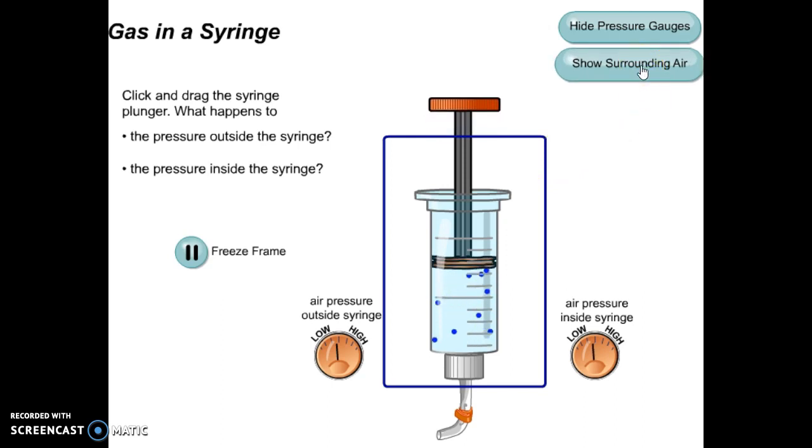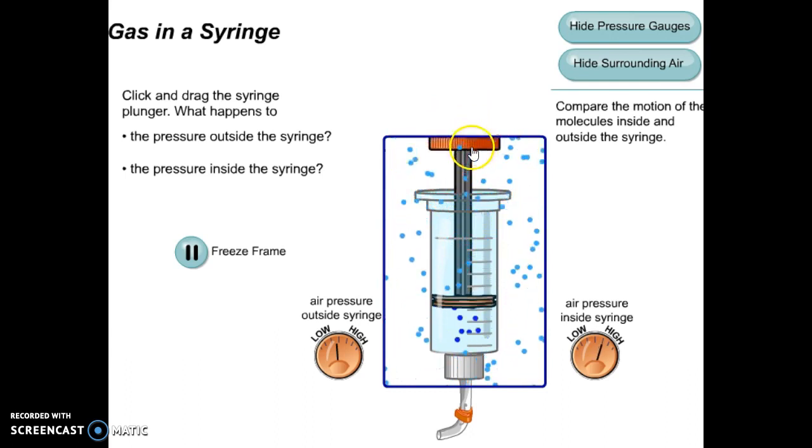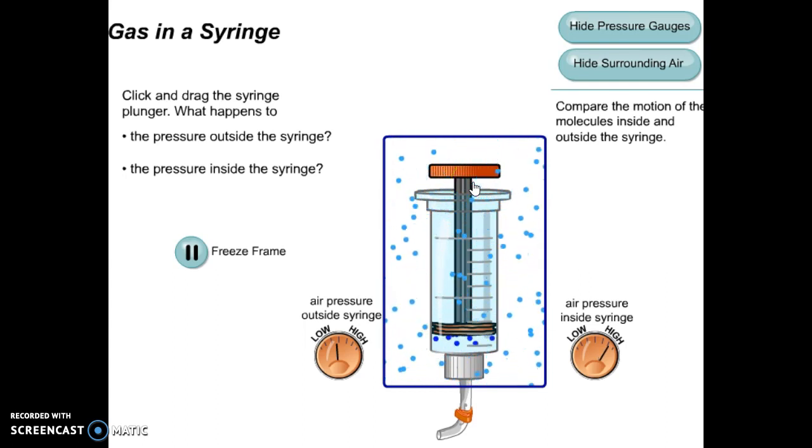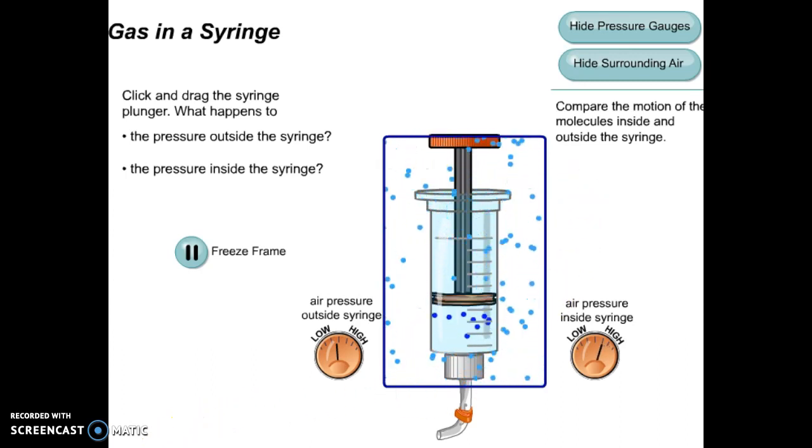I'll quickly just show you the surrounding air. So you can see the molecules are moving at about the same speed inside and outside of the syringe. But if we push the plunger down, as we go down, the molecules just have a lot less space, so they're just not moving as much as the molecules on the outside. I hope that's helpful in understanding the movement of molecules in compressed air.